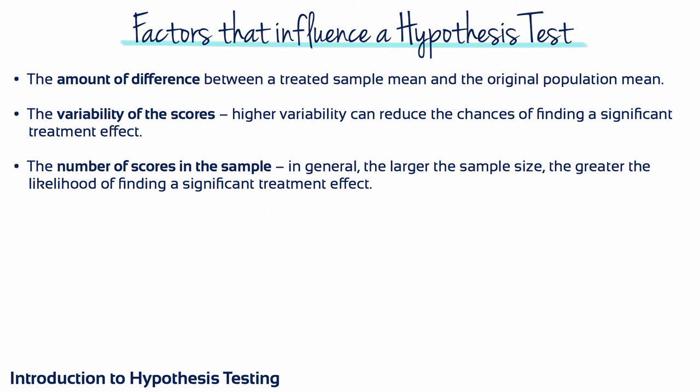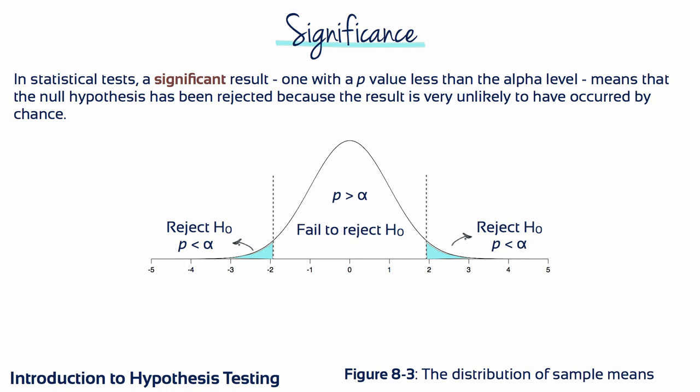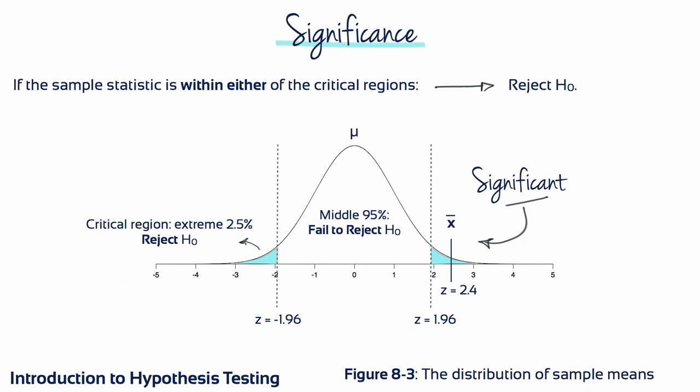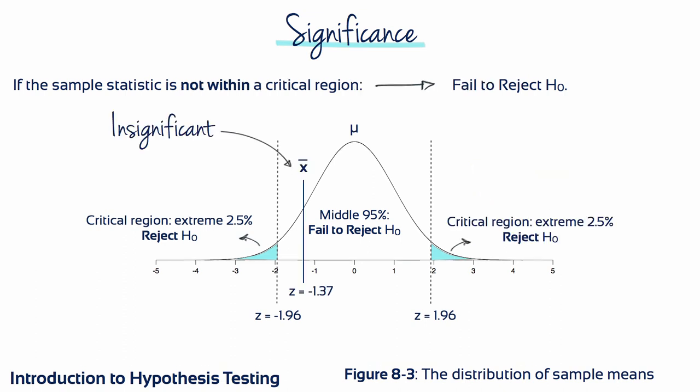There are three factors that influence the outcome of a hypothesis test: the amount of difference between a treated sample mean and the original population mean; the variability of the scores — higher variability can reduce the chances of finding a significant treatment effect; and the number of scores in the sample. In general, the larger the sample size, the greater the likelihood of finding a significant treatment effect. A significant result is one with a p-value less than the alpha level, meaning the null hypothesis is rejected because the result is very unlikely to have occurred by chance.